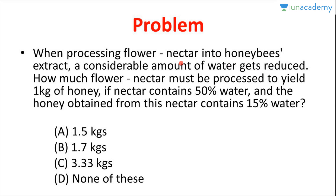There is something else also in the flower nectar besides water — that is honey or pulp. So whenever this flower nectar is processed, the amount of honey will not reduce, while the percentage of honey will increase. If the water is getting reduced, the amount of honey remains constant, but the percentage of honey will increase. This is the basic concept on which this question is based.